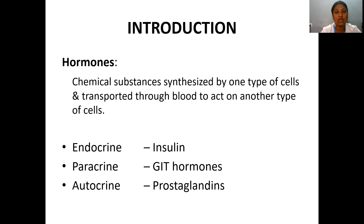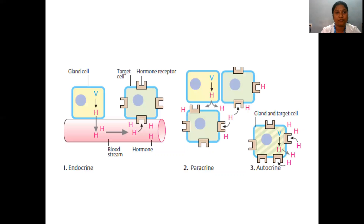Examples for paracrine signaling include GIT hormones. Autocrine is when cells synthesize a substance which acts on the same cell itself to bring about the desired effects. Examples for autocrine signaling include prostaglandins.